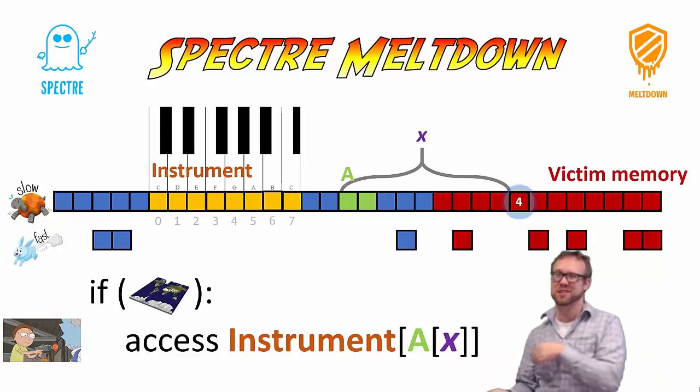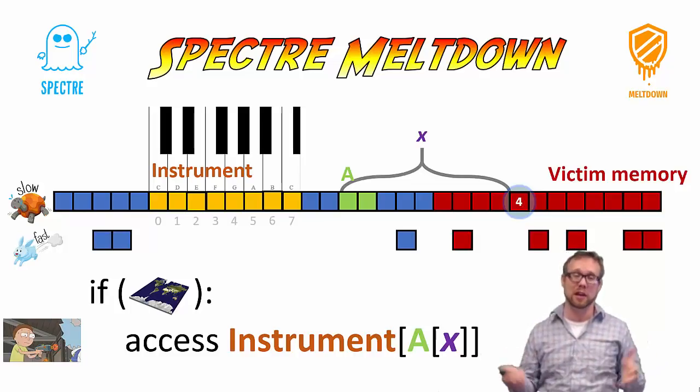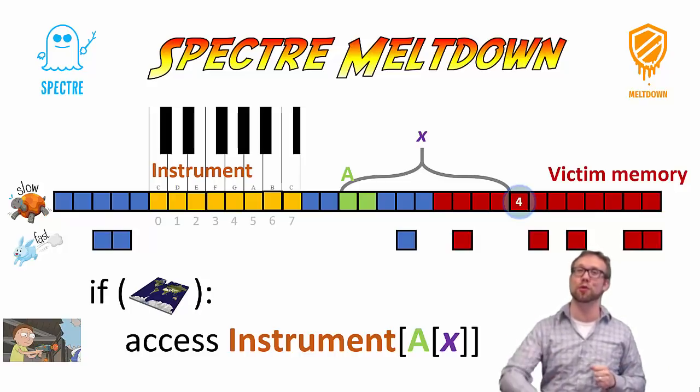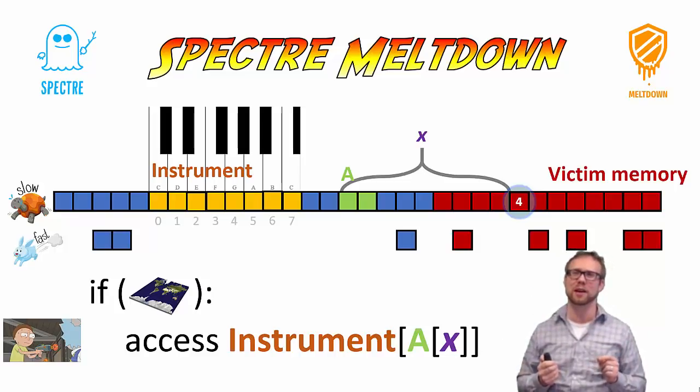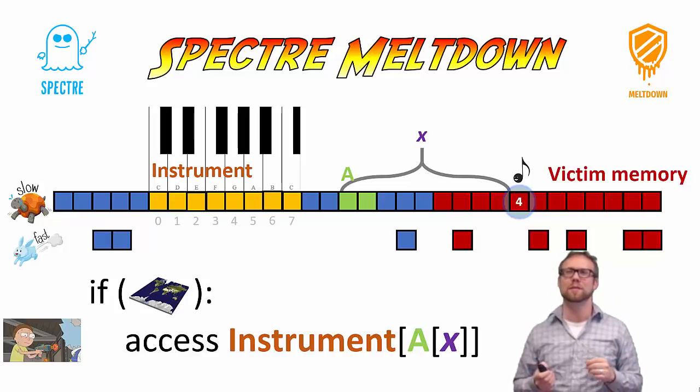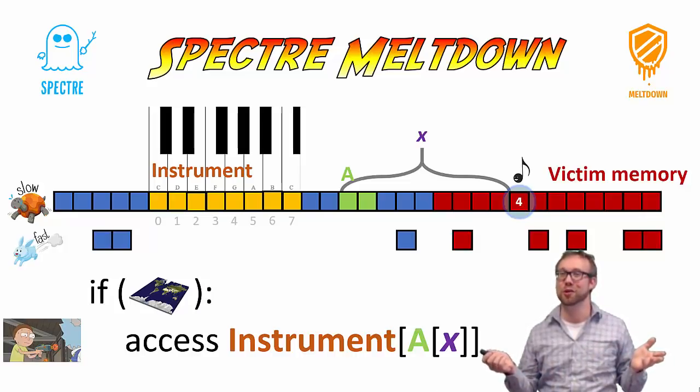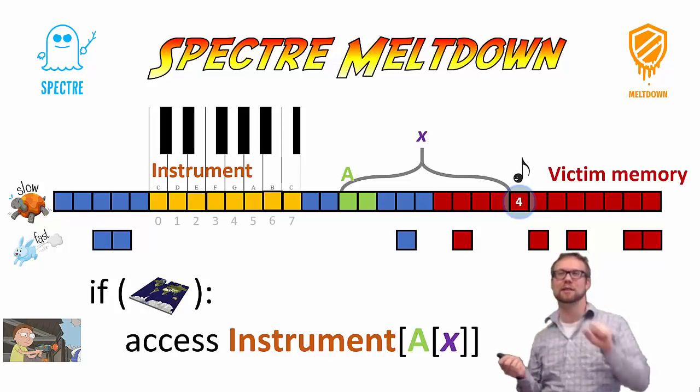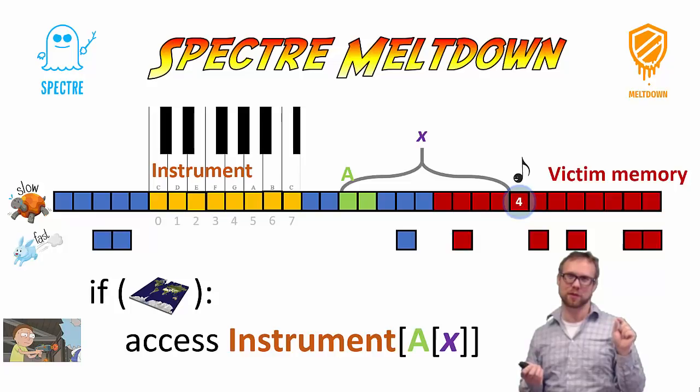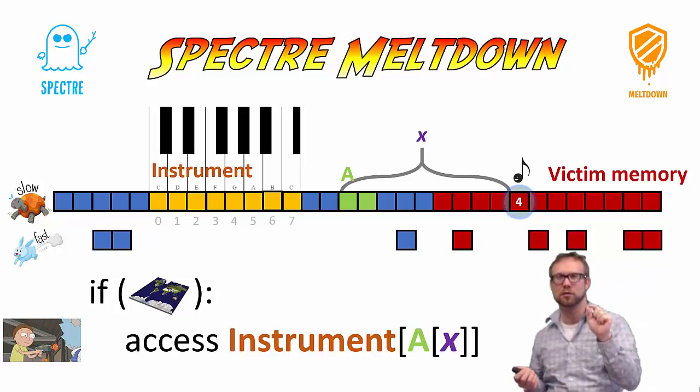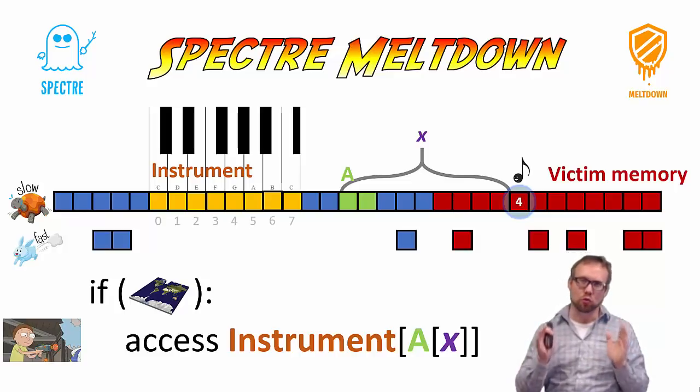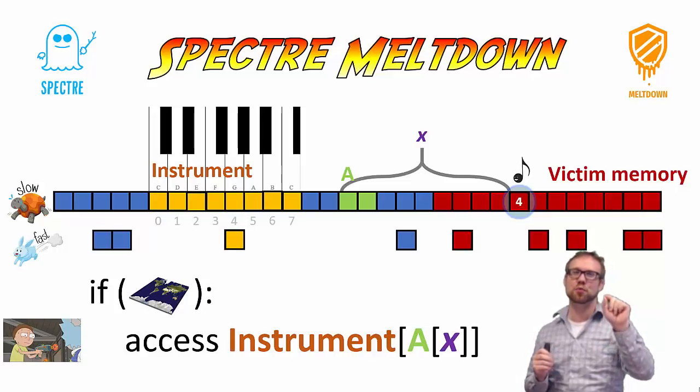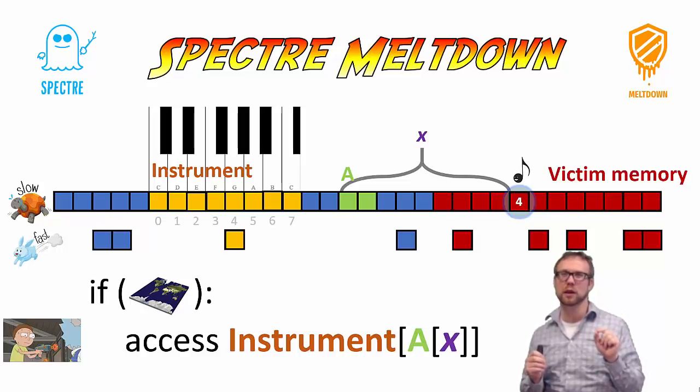I don't know that it's out of bounds yet because that's the role of the kernel. I will find this out later. If this was actually what's going to get triggered, the kernel will kill the program because it's reaching memory it shouldn't. But as a speculative execution engine, I'm just going to look ahead into the memory and see what's there. And I see that it's actually the letter four or the number four. And I'm going to take that and I'm going to look up in the instrument array at location four or note G. I'm going to play it. And what that does, and this is the crucial part about this attack, is that it brings that part of the instrument array into cache.